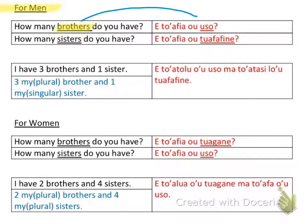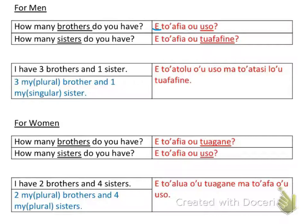Now we're going to learn how to say 'how many brothers do you have' for a male. If you're talking to a male, you would say 'a toafia o uso.' Breaking this up, the 'a fia' part by itself means 'how much' or 'how many.' In this case it's 'how many,' and since I'm asking about an amount of people, I throw on that 'toa' part.